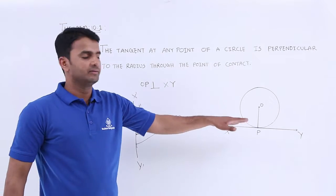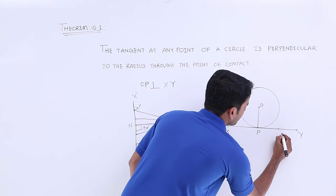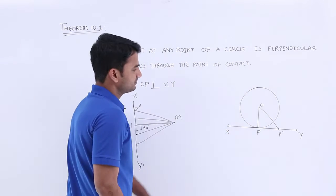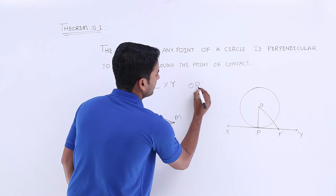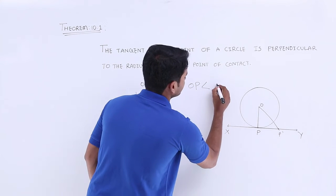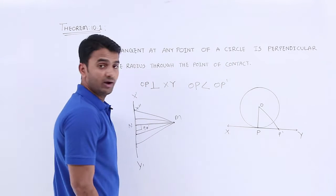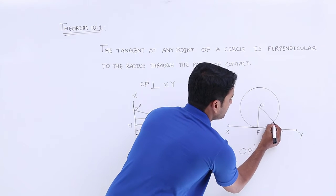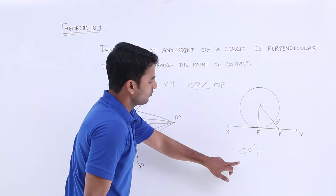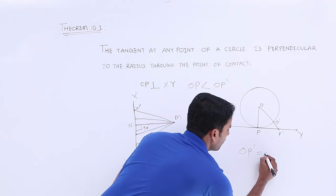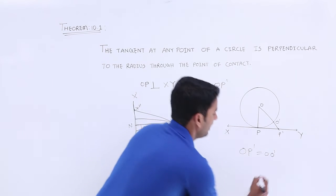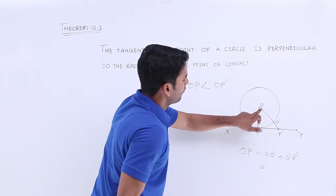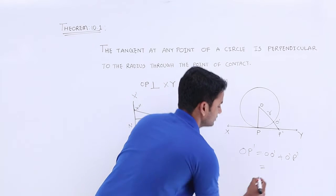The same concept will be applied here. Suppose I take a point P dash and join it — OP is the radius, so OP will be less than OP dash. Here OP dash equals OO dash plus O dash P dash, where OO dash is the radius, so we can write it as r plus O dash P dash.